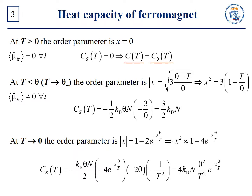At T less than theta, the order parameter has the following form. So, x squared looks like this. In this case, we can find the expression for Cs. The abrupt jump of heat capacity at the Curie point is concerned with the appearance of new degrees of freedom in the system.